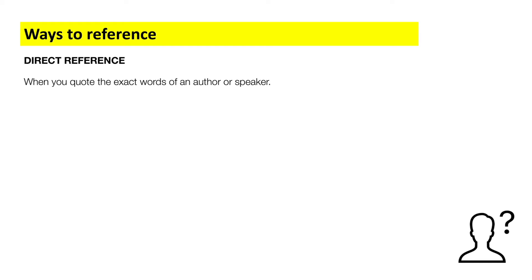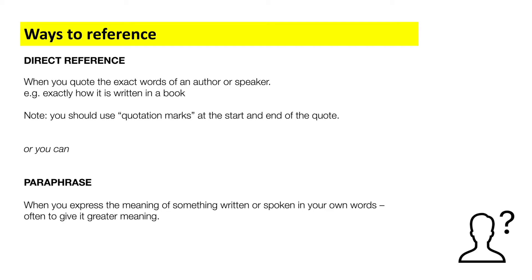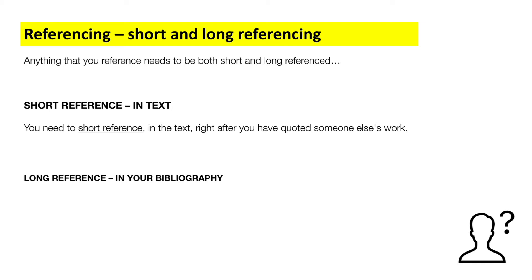The different ways of referencing: a direct reference is when you quote the exact words of an author or speaker, exactly how it is written or said in a book or within a lecture. Note that when you do this you should use quotation marks at the start and end of the quote. Or you can paraphrase, which is when you express the meaning of something written or spoken in your own words, often giving it greater meaning. Be aware though — if four or more words are in the same order as the original text, it is considered a direct quote. So you must totally rewrite the author's idea in your own words to paraphrase.